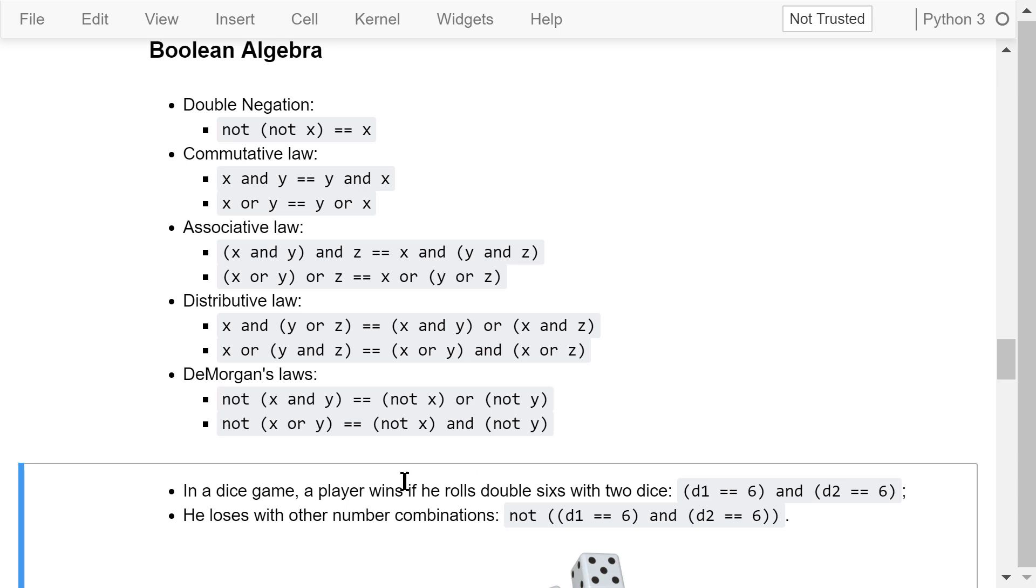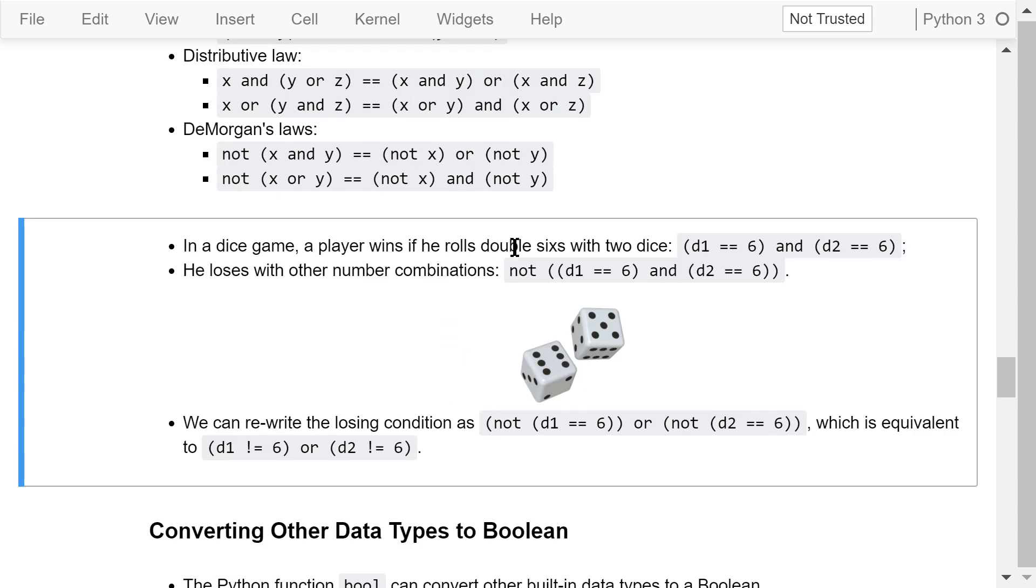Here is an example. In a dice game, a player wins if he rolls double sixes with two dice. That means he wins if d1 is equal to 6 and d2 is equal to 6. He loses with other number combinations, which means NOT this condition. Using De Morgan's law, we can rewrite the losing condition as NOT d1 equals 6 or NOT d2 equals 6. This is equivalent to d1 is not equal to 6 or d2 is not equal to 6.